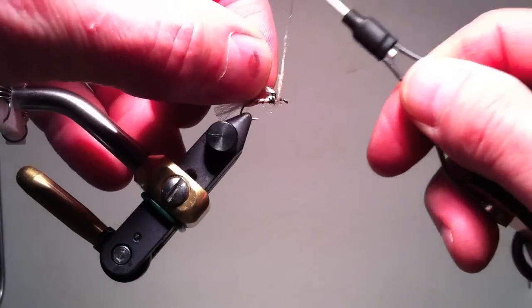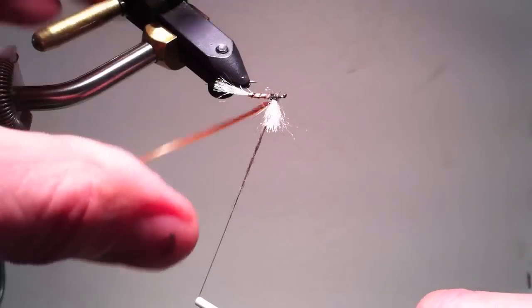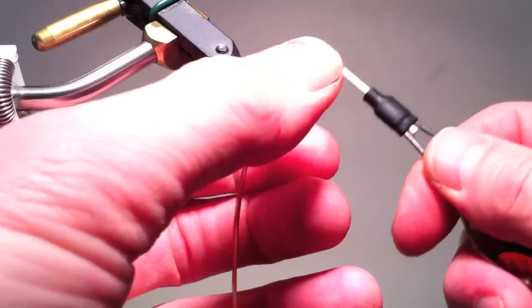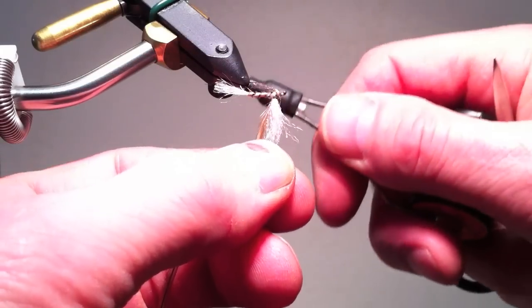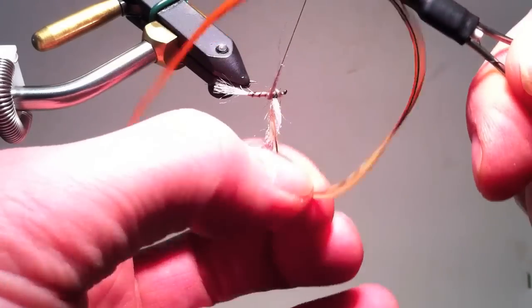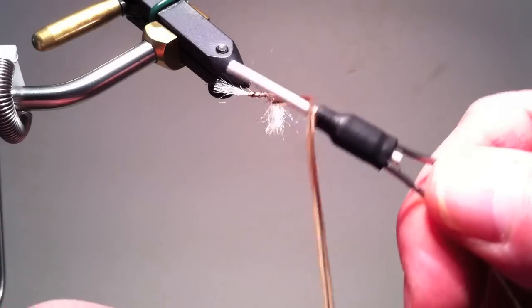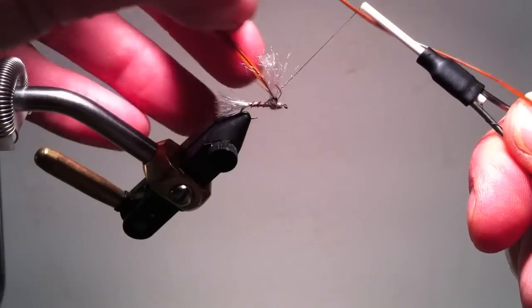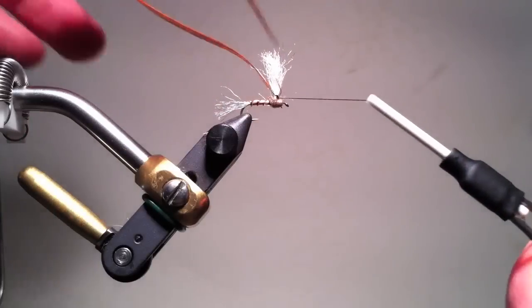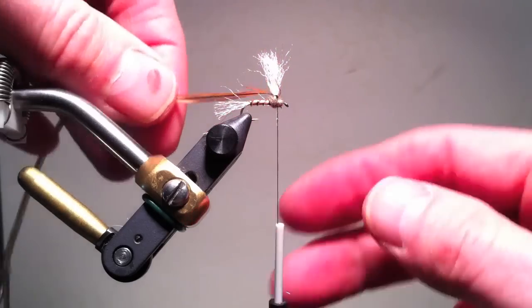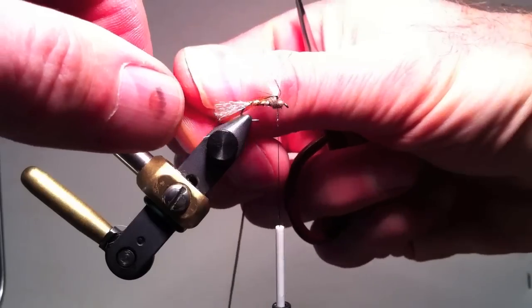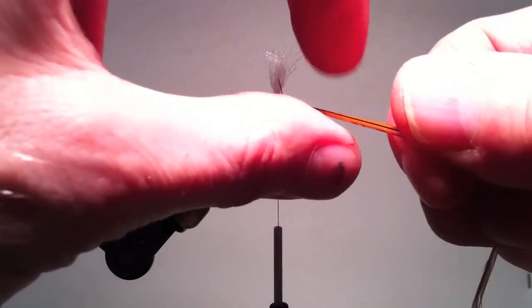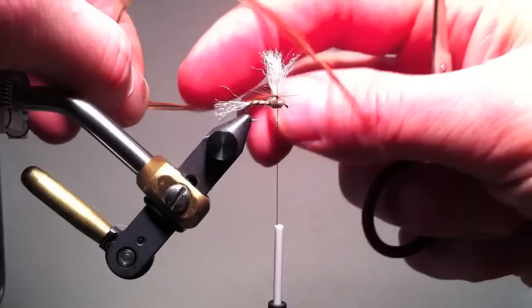I use the rotary vise only partially to expose the base of the fly or the bottom of the fly so I can be sure that the fish will be seeing a prominent thorax. After that, I put the fly back upright, keep my thread on my side of the hook but very close to the base of the post, and wind in my hackle.